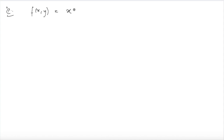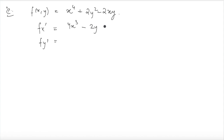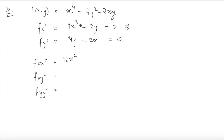f(x, y) = x⁴ + 2y² - 2xy. You have to find its local extreme points. The first step is to find out the partial derivatives. fx' = 4x³ - 2y, set equal to zero. fy' = 4y - 2x, set equal to zero. The second order derivatives are: fxx'' = 6x², fxy'' = -1, and fyy'' = 4. We can also simplify the first equation by dividing by 2: 2x³ - y = 0.